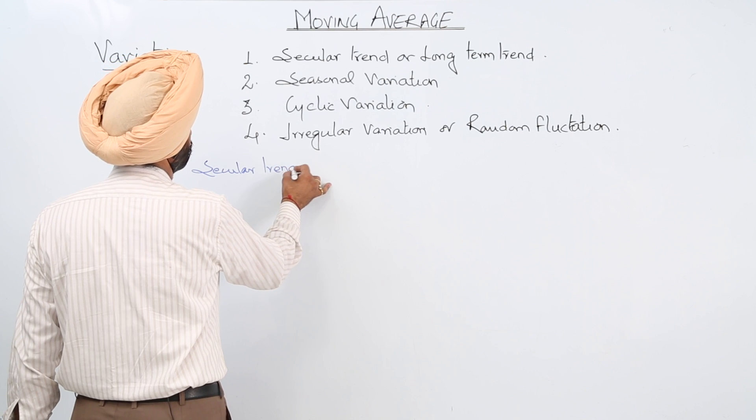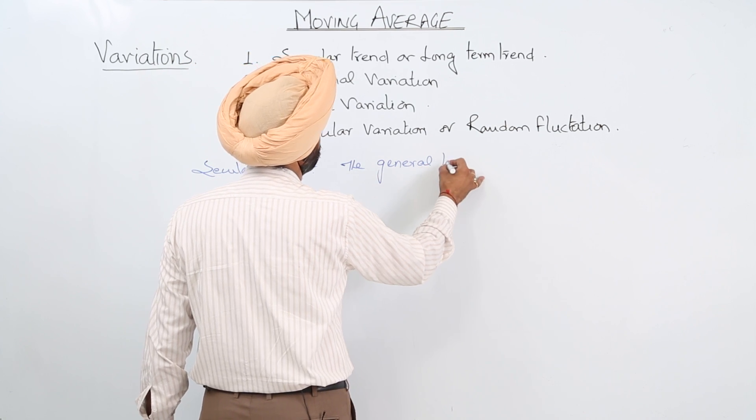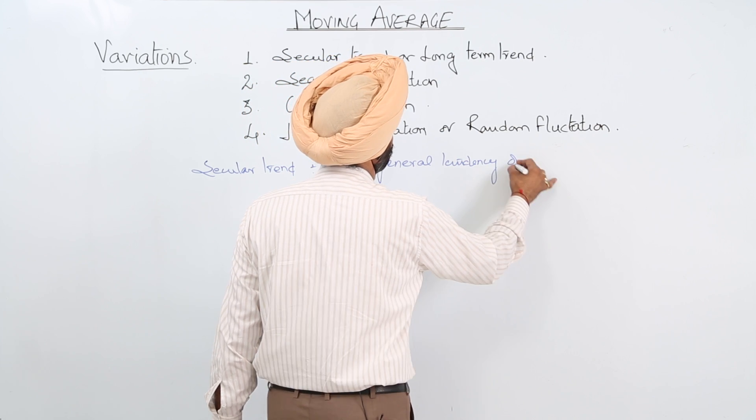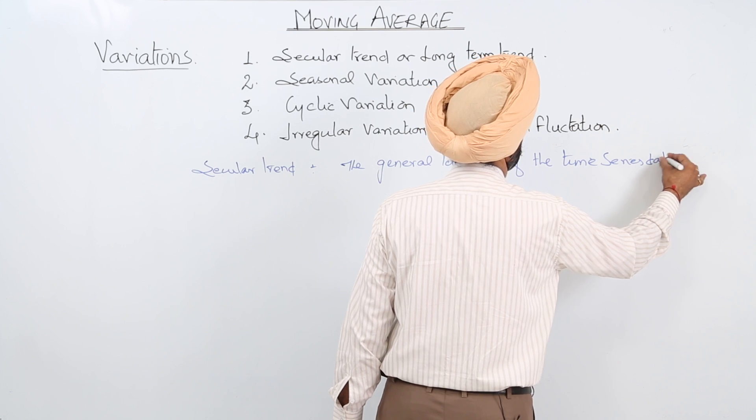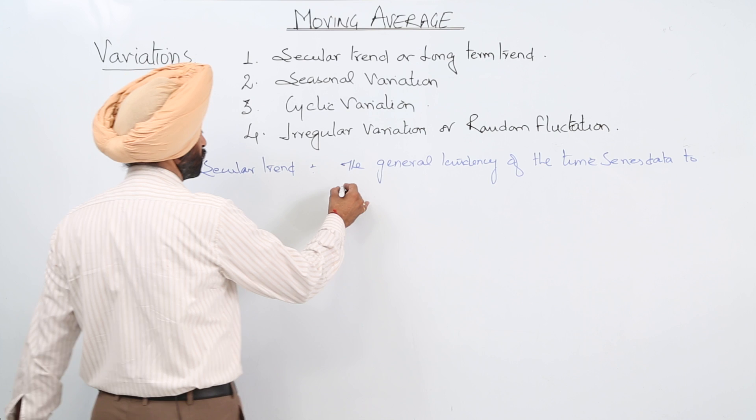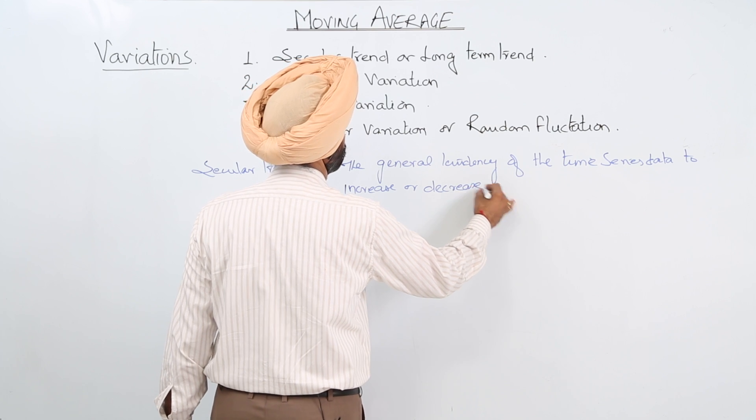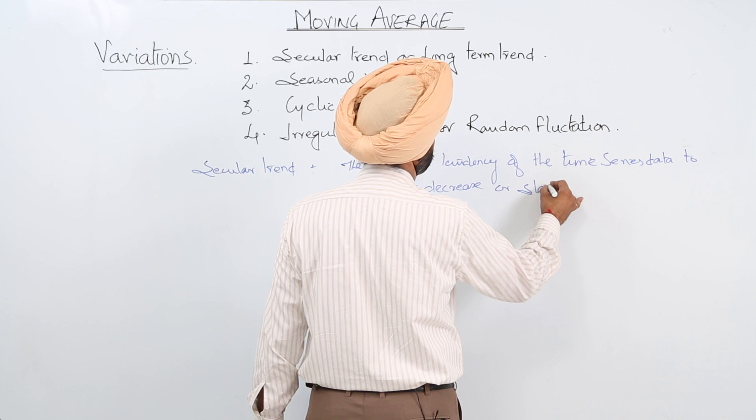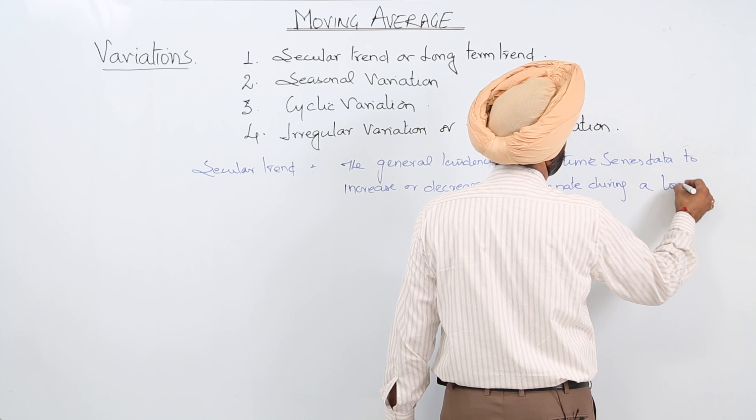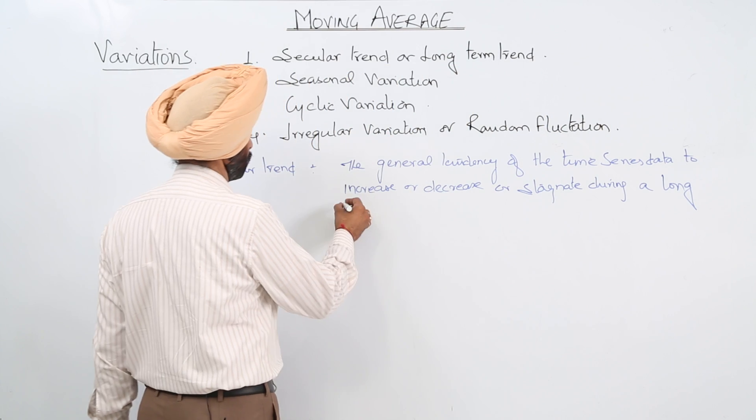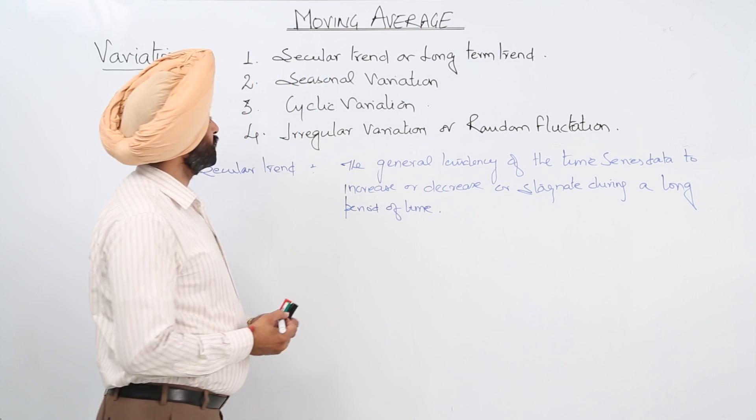Secular trend. Now the general tendency of the time series data to increase or decrease or stagnate during a long period of time. Now this is a secular trend.